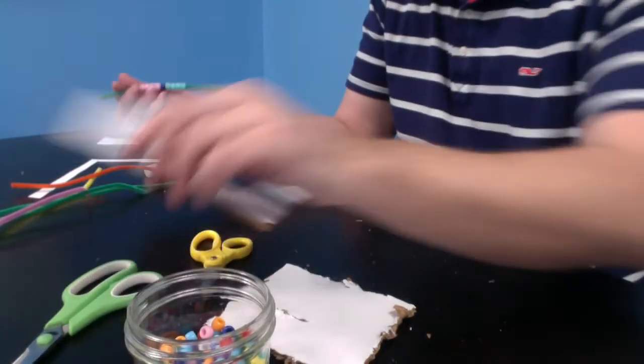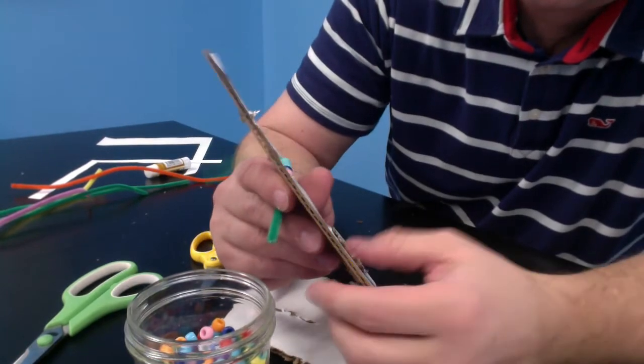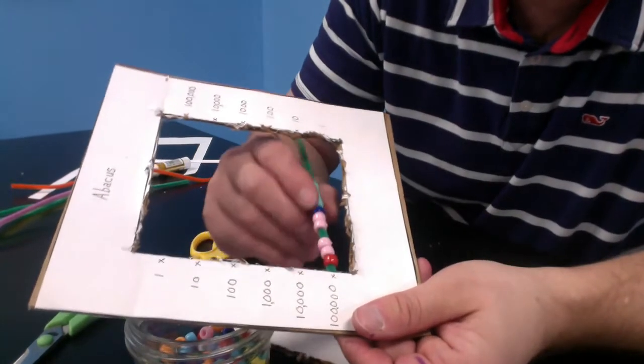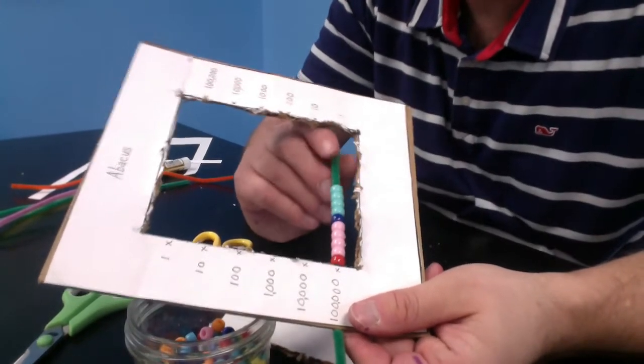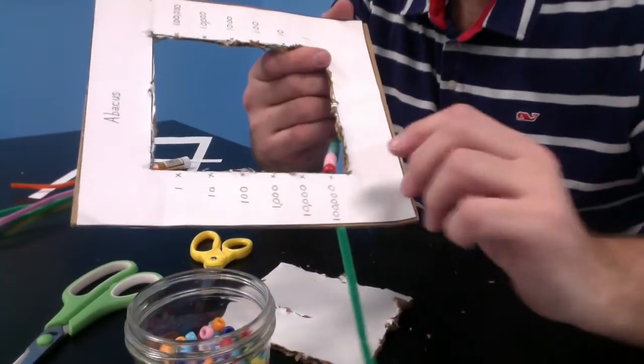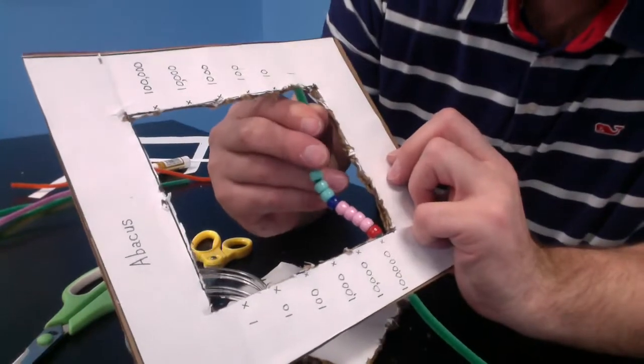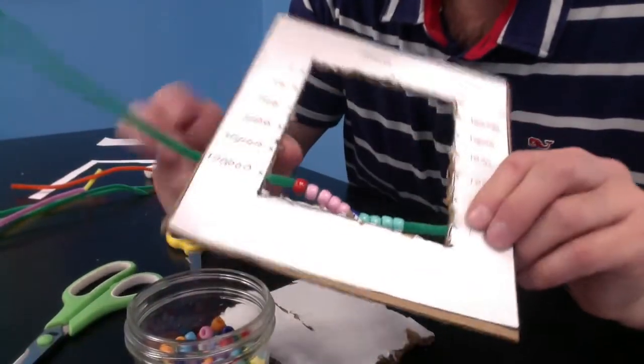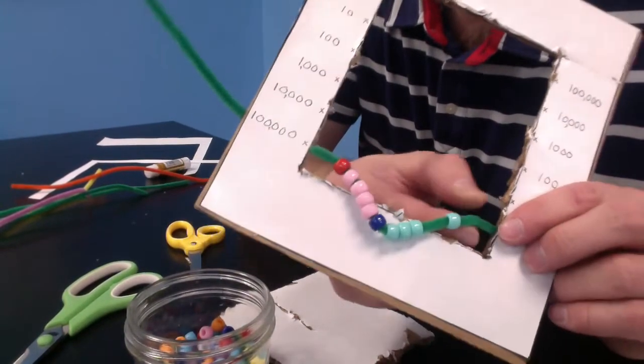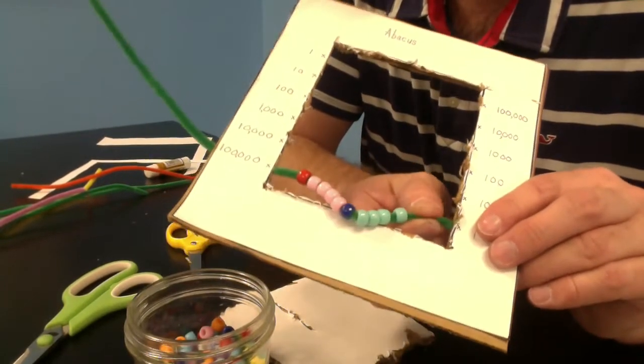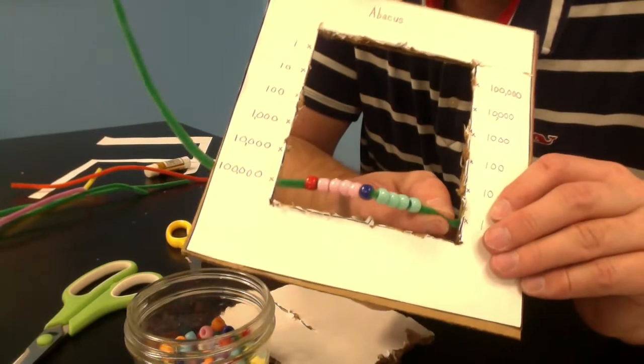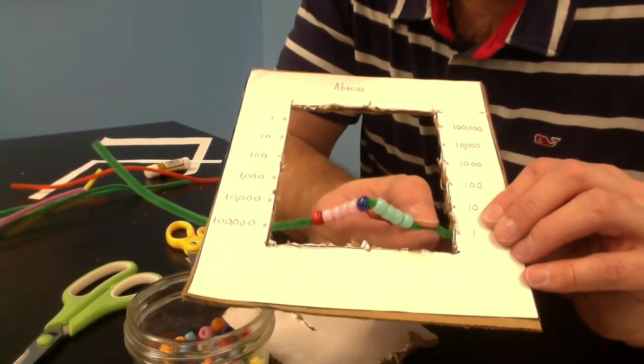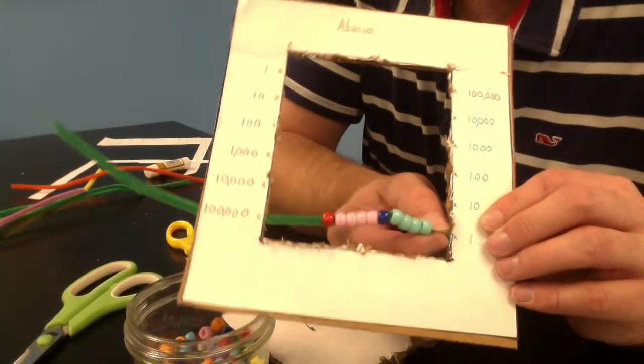So next what you're going to do is the corrugated cardboard has folds. You can actually put the pipe cleaner right into one of those folds. Try to match it up with one of the X's. And then you can push it all the way through like that. And then you're just going to feed it in through the other side. Trying to make it go through where the X is approximately. A little bit higher. And should go all the way through. Unless you accidentally damaged the cardboard a little bit by cutting it. Maybe a little bit lower. Okay, here we go.